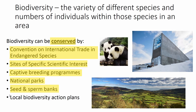Finally, there are local biodiversity action plans. These are set up by councils to promote biodiversity within their areas, with very specific action plans such as planting more trees or clearing up litter. All local litter programs fall under this realm, so they tend to be more local in scope.